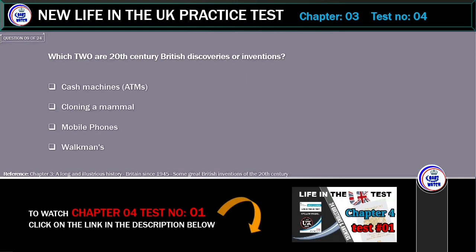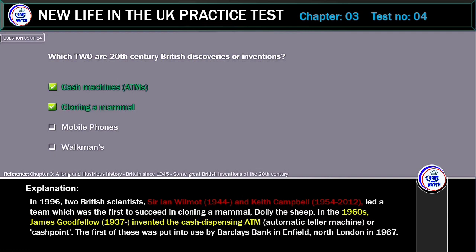Which two were 20th century British discoveries or inventions? Options: cash machines (ATMs), cloning a mammal, mobile phones, or walkmans. The correct answers are cash machines (ATMs) and cloning a mammal. In 1996, two British scientists, Sir Ian Wilmot and Keith Campbell, led a team which was the first to succeed in cloning a mammal — Dolly the Sheep. In the 1960s, James Goodfellow invented the cash-dispensing ATM. The first was put into use by Barclays Bank in Enfield, North London in 1967.